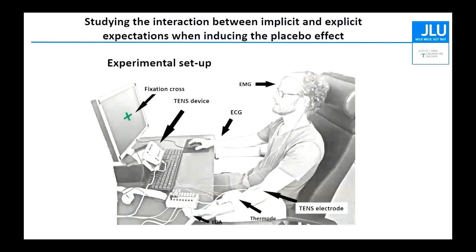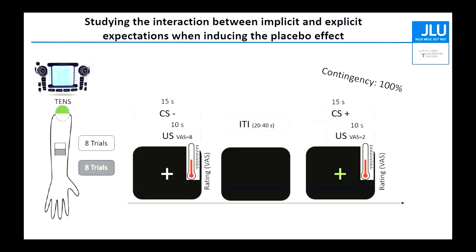We wanted to use a clinical device that we could also later use in patients. So we used a real TENS device — a TENS machine — that was manipulated so that it did not actually function, but the display lit up so it looked very real. We used TENS electrodes and heat stimuli to induce pain. In the first experiment, we presented participants with a fixation cross on the monitor, which functioned as a conditioned stimulus paired with a low-intensity heat pain stimulus. A white fixation cross was paired with the TENS device being off.